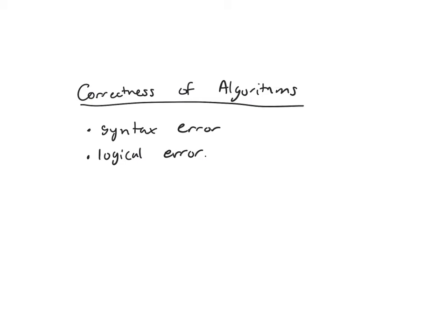So we have this problem: how do we find our logical errors? Are we sure that our program is actually doing what we want it to do? One problem is that we can look at our input data and we could have an infinite amount of input data. Or even if it's not infinite, it could be unmanageably large. We can't plug in every possible value and make sure it spits out the right value.